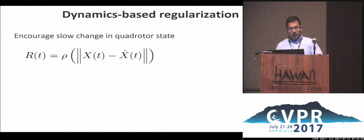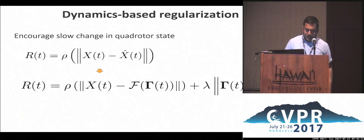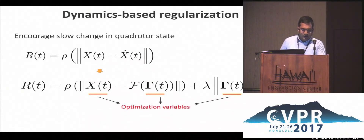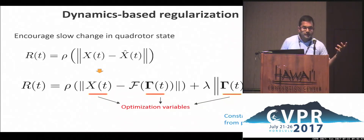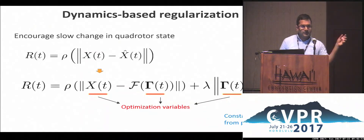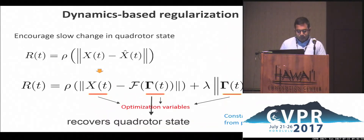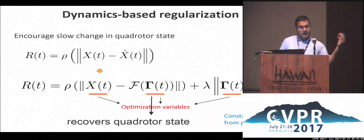When we plug those into the objective, in addition to the 3D points, we have additional variables — the internal state variables of the quadrotor. Gamma-hat is a constant computed in the previous iteration by smoothing the internal states, and it puts a soft constraint on these internal state variables. I would like to point out that this framework lets you actually directly infer these internal states — that's one of the key features of this proposed technique.